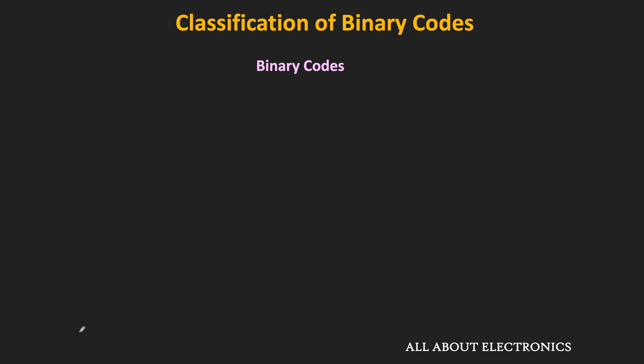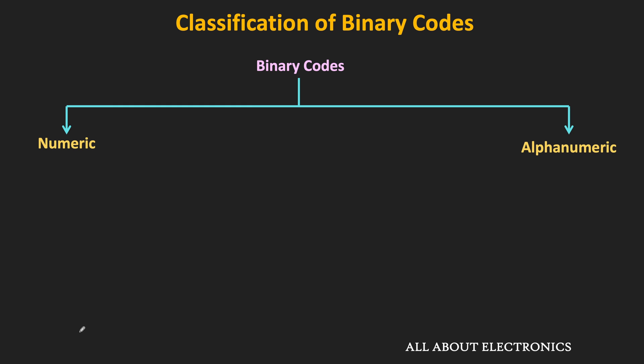Binary codes are mainly classified into two categories: numeric binary codes and alphanumeric binary codes. The binary codes used to represent numeric information or numbers in a sequence of ones and zeros are called numeric codes. Alphanumeric codes represent alphanumeric information like letters, numbers, and characters.